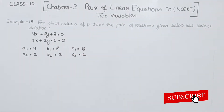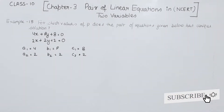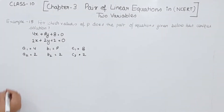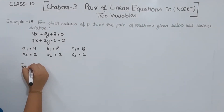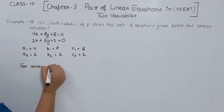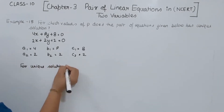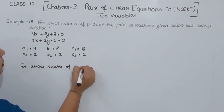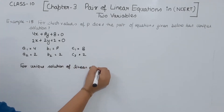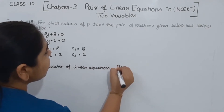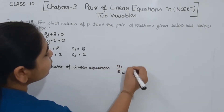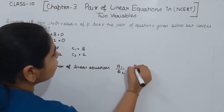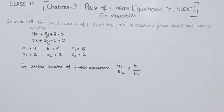Now we know that for a unique solution of linear equations, the condition is: A1 by A2 is not equal to B1 by B2. This is the condition we will use for the unique solution.